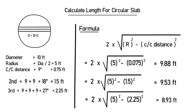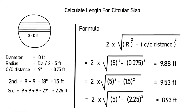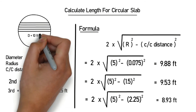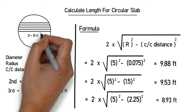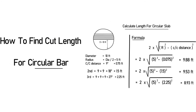You can also find the cut length for the fourth and fifth bars with the same method. Note that if you find the length of one side of the circle, the other side will have the same length. This was our topic for today. If you have any questions or suggestions, write in the comments below. Thanks.